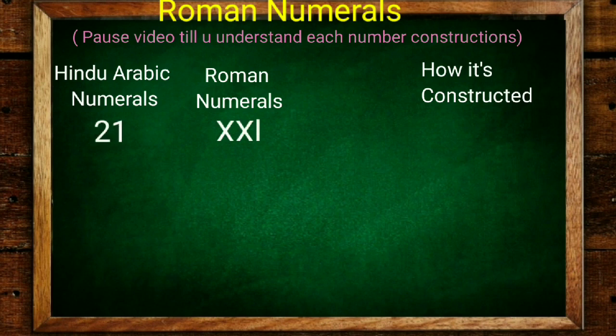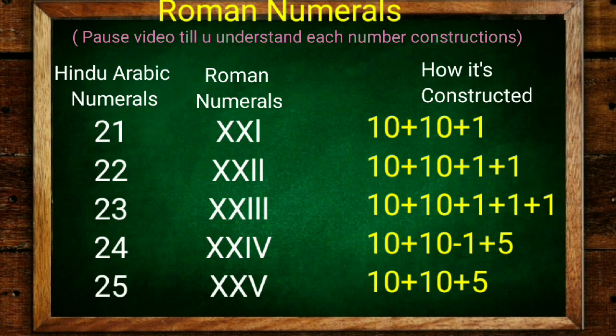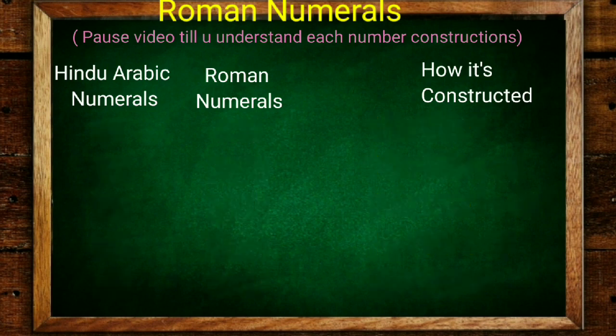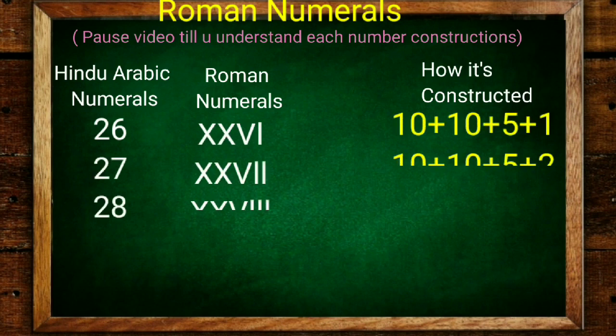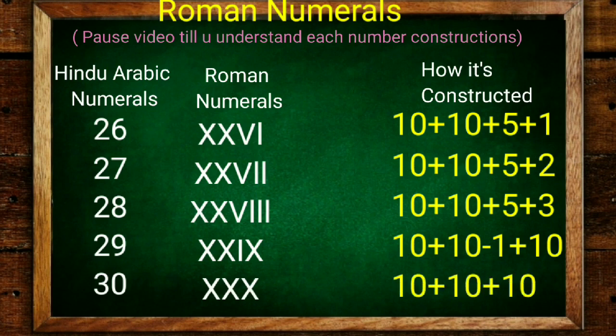21 is 10 plus 10 plus 1 (20 plus 1), 22 is 20 plus 2, 23 is 20 plus 3. 24 is 20 minus 1 is 19 plus 5, and 25 is 20 plus 5. 26 is 20 plus 5 plus 1, 27 is 20 plus 5 plus 2, 28 is 20 plus 5 plus 3. 29 is 20 minus 1 is 19 plus 10, and 30 is 10, 10, 10.